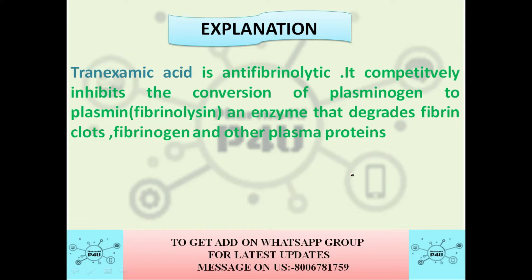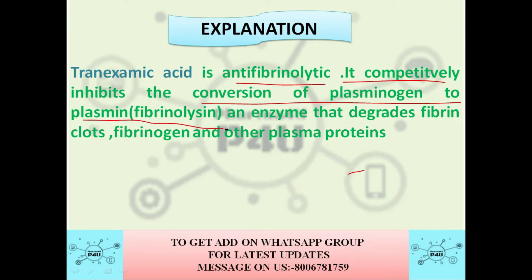Tranexamic acid is an anti-fibrinolytic and it competitively inhibits the conversion of plasminogen to plasmin. Just write down the mechanism of action: it inhibits the conversion of plasminogen to plasmin, which is an enzyme that degrades fibrin clots and fibrinogen and other plasma proteins. So tranexamic acid is an anti-fibrinolytic.